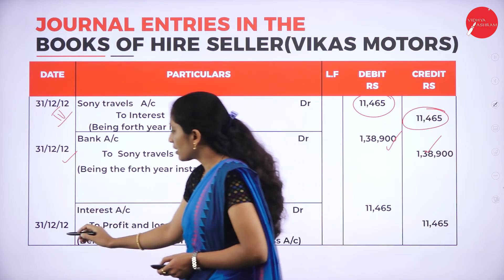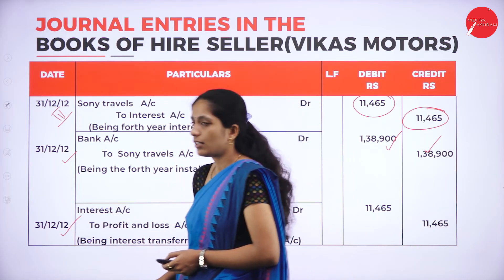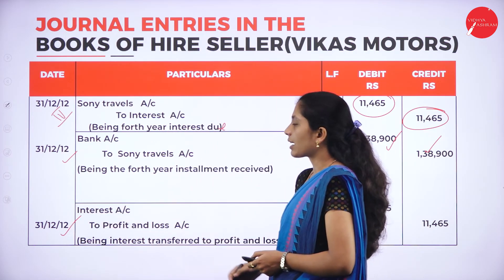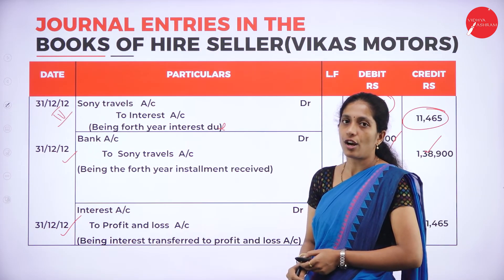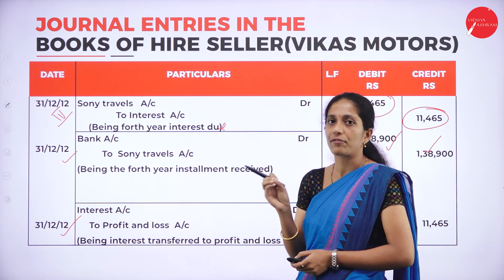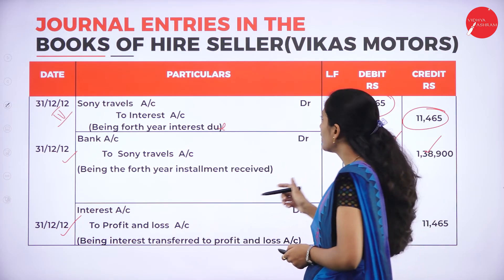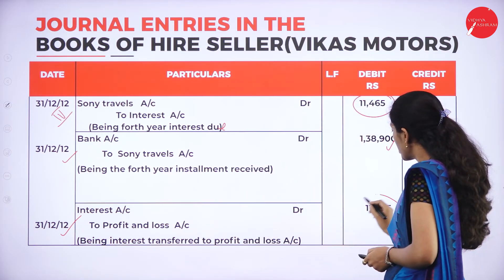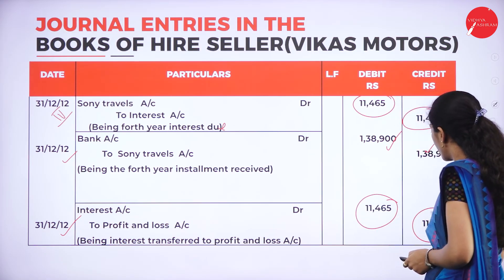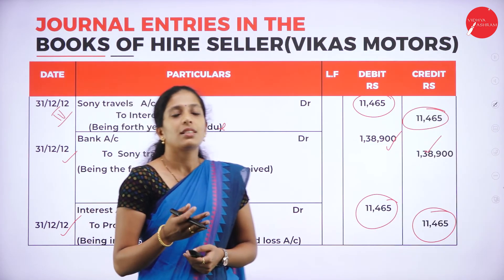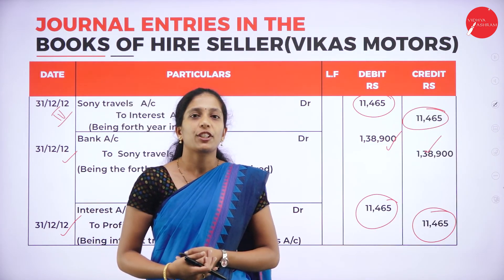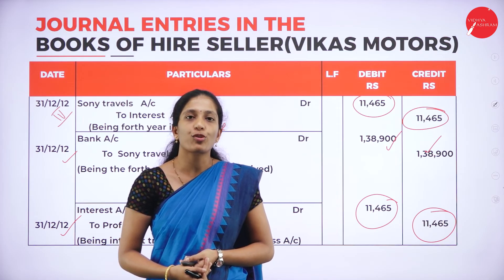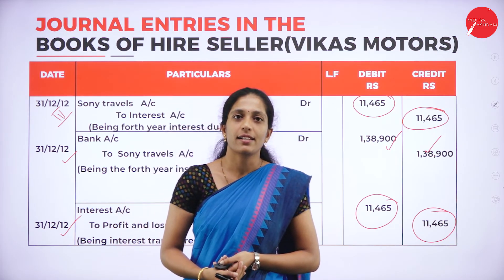Fourth year entries — 31st December 2012. Interest due: Sony Travels Account debit to Interest Account — being fourth year interest due — for 11,465. Installment received: Bank Account debit to Sony Travels Account — for 1 lakh 38,900. Transfer interest to profit and loss account: Interest Account debit to Profit and Loss Account — for 11,465.